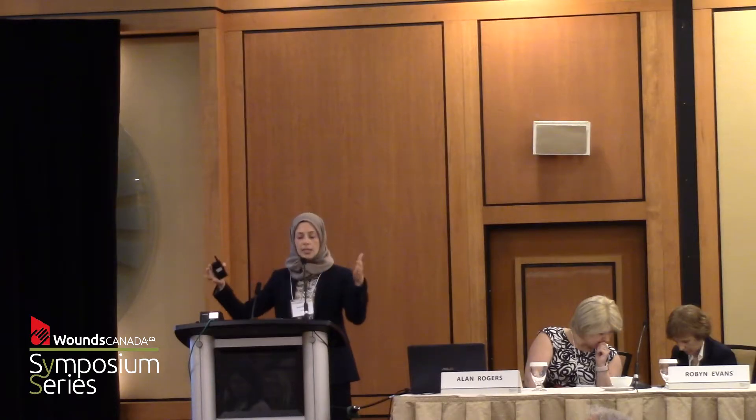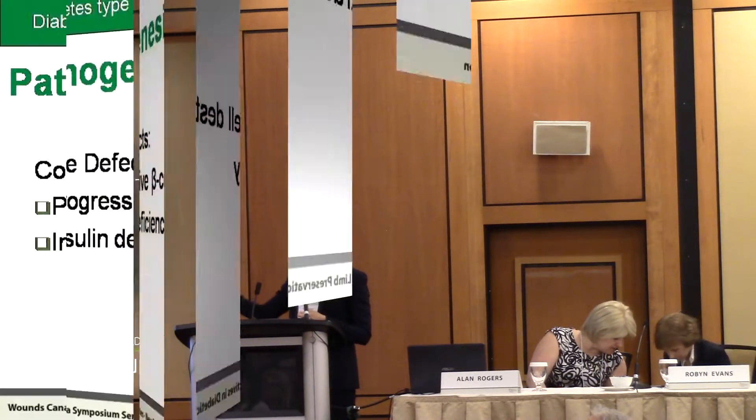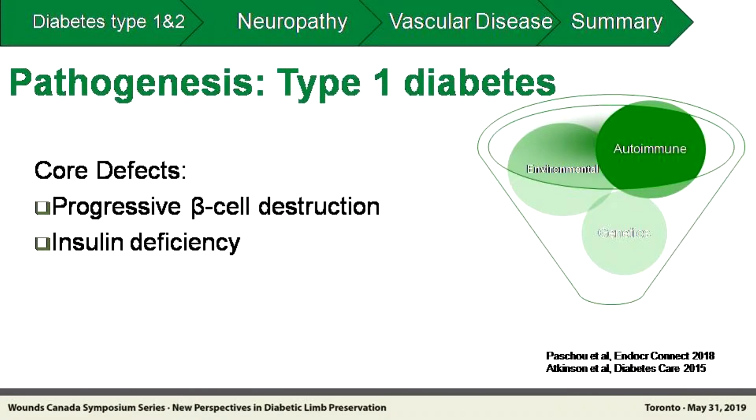One suggestion from the audience is time of diagnosis — maybe we're catching them late and missed the boat. Type 1 diabetes occupies about 10% of all diabetes. In type 1, we see progressive beta cell destruction, so that at the time of diagnosis about 90% of beta cells are gone, resulting in insulin deficiency.